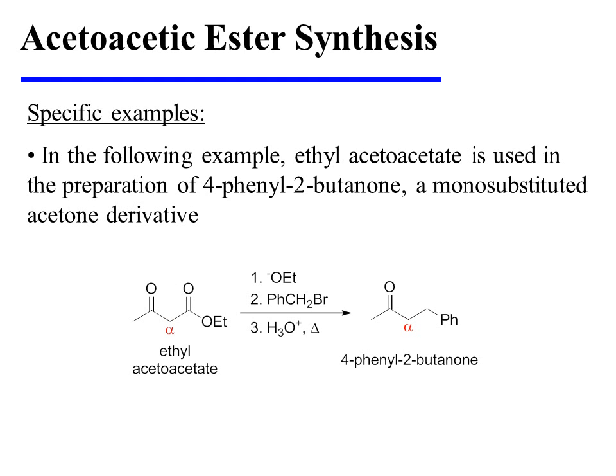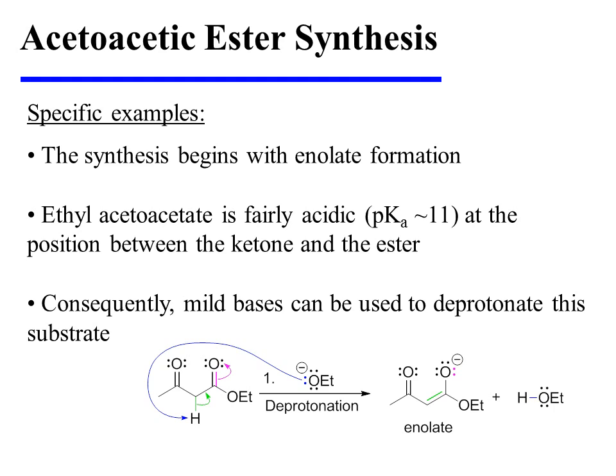Let's take a look at some specific examples. In the following instance, ethyl acetoacetate is used in the preparation of 4-phenyl-2-butanone, a monosubstituted acetone derivative. The synthesis begins with enolate formation. Ethyl acetoacetate is fairly acidic at the position between the ketone and the ester — it has a pKa of about 11.